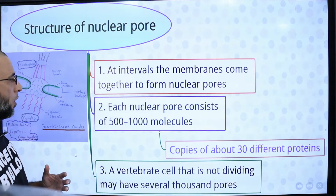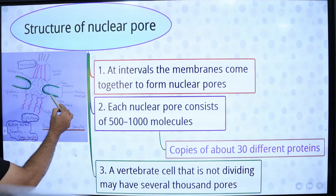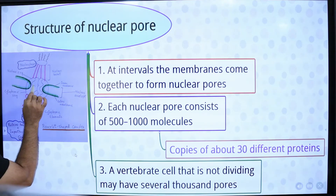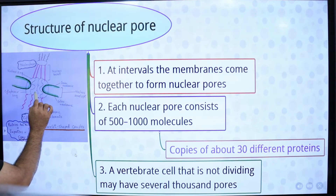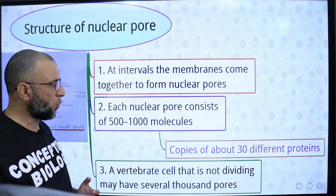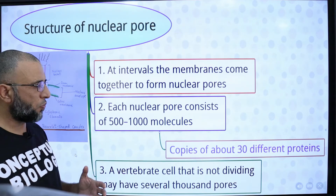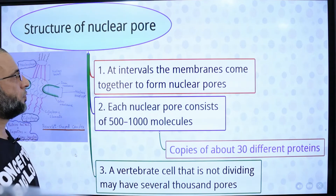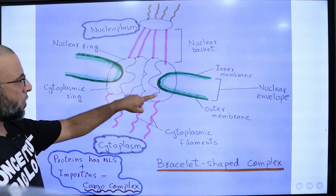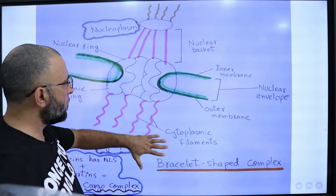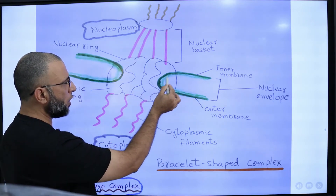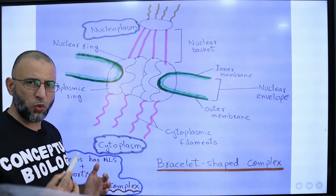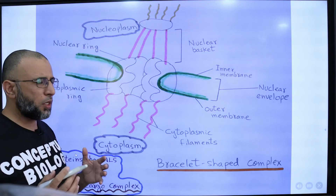Structure of nuclear pore: the nucleus is bounded by two membranes — the outer nuclear membrane and the inner nuclear membrane. At some points, the outer and inner nuclear membranes are continuous, and that results in the formation of a small opening called a nuclear pore. Each nuclear pore consists of 500 to 1000 molecules, and these molecules contain 30 different types of proteins. A vertebrate cell that is not dividing may contain several thousand nuclear pores.